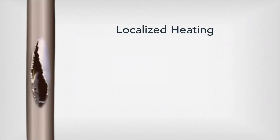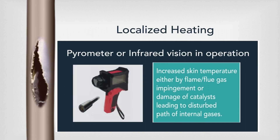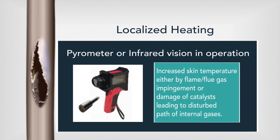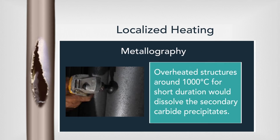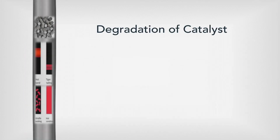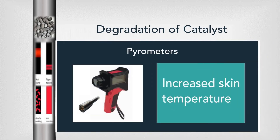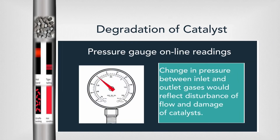Localized heating can be detected through pyrometer or infrared vision in operation, and metallography. Degradation of catalyst can be detected by pyrometers and pressure gauge online readings.